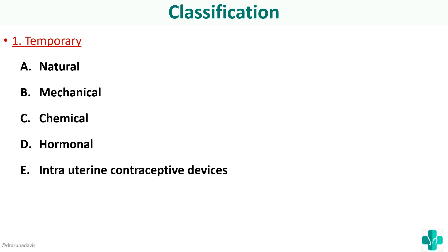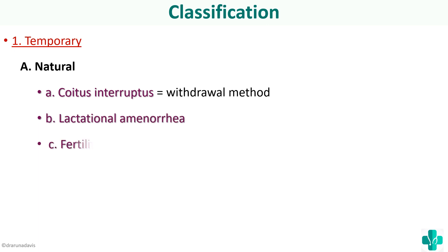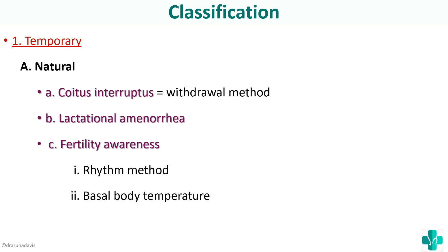In this video we are going to discuss the first category: natural methods of contraception. Natural methods include coitus interruptus, also called the withdrawal method; lactational amenorrhea; and fertility awareness, which includes the rhythm method, basal body temperature, and cervical mucus method.